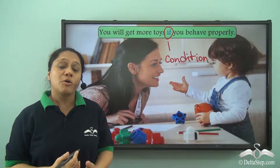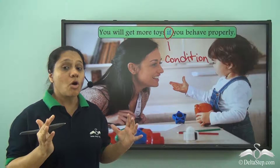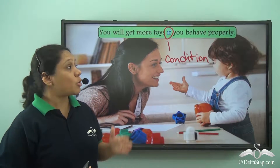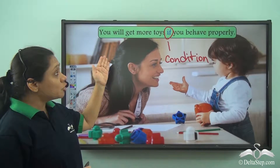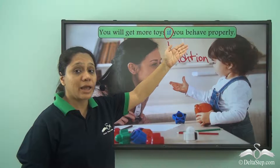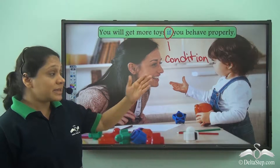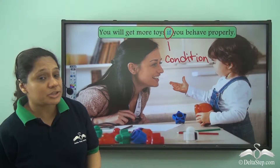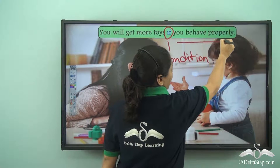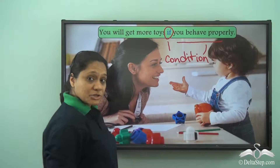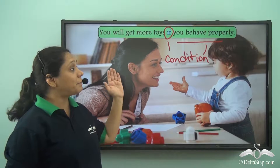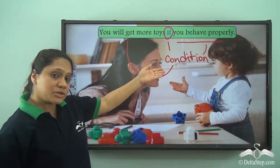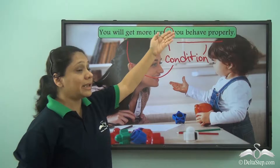What is a condition? When something happens only if another thing happens, we say there is a condition. In this sentence, this child will get toys only if she behaves properly. So 'you behave properly' is the condition, and 'you will get more toys' is the action that is dependent on the condition. This will happen only if this happens.